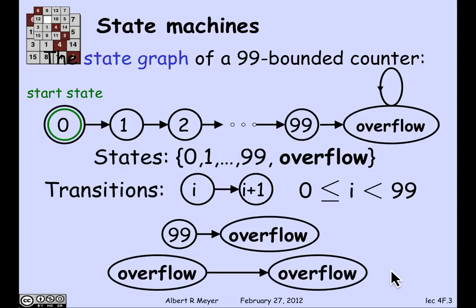This is a machine that if you really built something that behaved this way, it wouldn't be much use because once it's overflowed, it's dead because it stays there. A real machine to be useful would have a reset transition which took overflow back to 0, but this illustrates the basic idea.